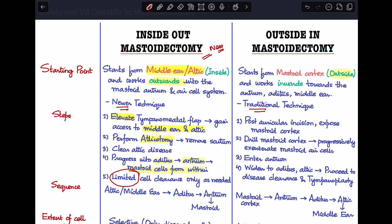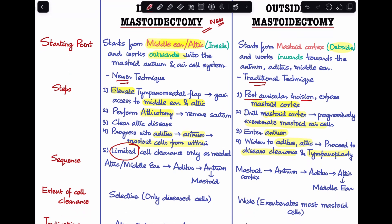In outside-in mastoidectomy, which is the more traditional approach, we start with a post-auricular incision and expose the mastoid cortex. We then drill through the mastoid cortex and progressively exenterate all mastoid air cells, ultimately reaching the antrum. Once we reach the antrum, our next step is to move towards the aditus and attic, which we widen up, then proceed to disease clearance, and lastly tympanoplasty. So the sequence is completely opposite: inside-out goes middle ear → attic → aditus → antrum → mastoid, whereas outside-in goes mastoid cortex → antrum → aditus → attic → middle ear.